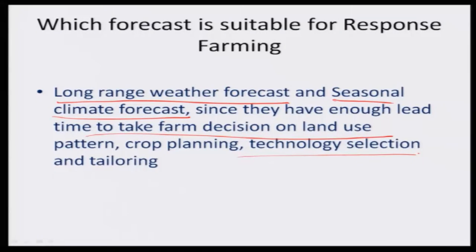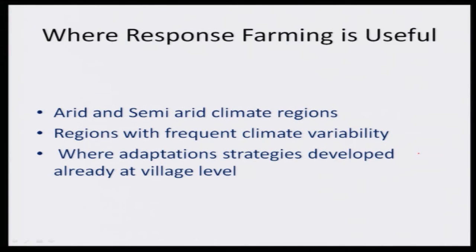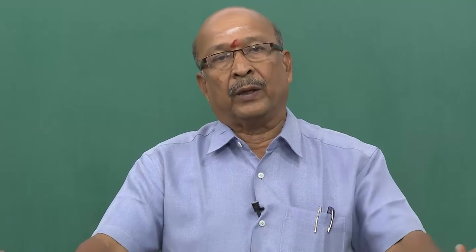You can select a technology — if drought comes, you select a drought management technology. Many things are available in scientific knowledge that can be rightly utilized. Where is response farming useful? Can we practice it in humid climate? In humid climate, rainfall and PET — potential evapotranspiration — are equal. If it is 2000 mm rainfall and evapotranspiration is also 2000 mm, there is no imbalance. So it cannot be practiced in a humid environment.